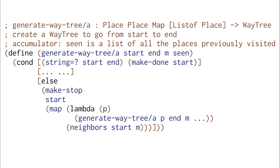Now what we need to do to turn generate-way-tree into generate-way-tree/a is supply the correct updated accumulator in the recursive call, and figure out something to do with the accumulator so that we can stop.